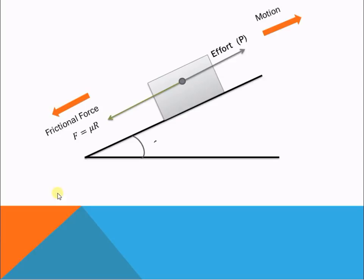Suppose the inclined plane makes an angle α with the horizontal. Weight will always act vertically in the downward direction and will have two components. One component is perpendicular to the plane, and another is parallel to the plane.